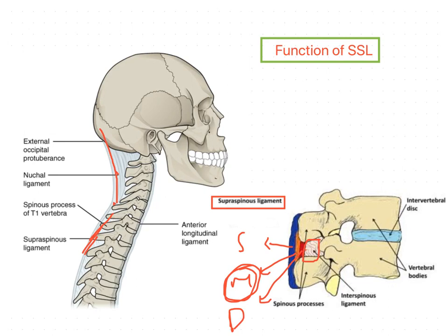Regarding the function of the supraspinous ligament: during flexion, the supraspinous ligament stretches, which limits flexion. It also serves as a midline attachment for some important back muscles and helps maintain the upright position of the head. During flexion, the fibers resist separation of the spinous processes.